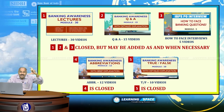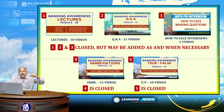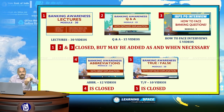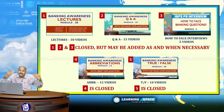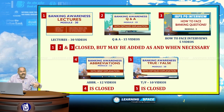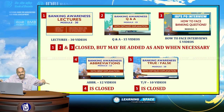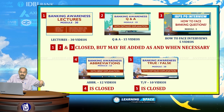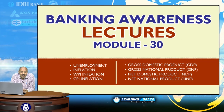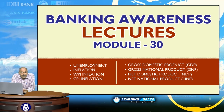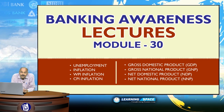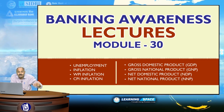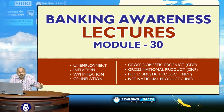Please listen to 30 lecture modules first, followed by other modules. Don't ignore even a single module — each is important. I would like to thank all viewers for reposing faith in Learning Space. Now let us look at the topics of module number 30: general events, unemployment, inflation, the difference between wholesale price index and consumer price index based inflation, how inflation is caused, and the difference between GDP, GNP, net domestic product, and net national product.